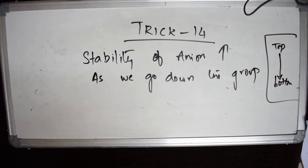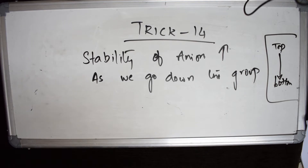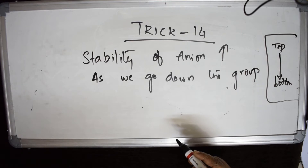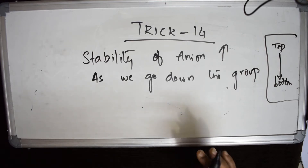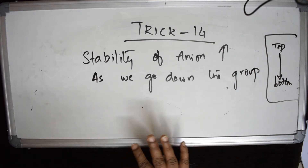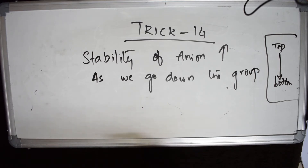You may recollect polarizability from Fajan's rule, where we said if the cation is smaller or the anion is larger, polarization increases. Polarizability is basically a measure of how an electron cloud is distorted in an electric field.